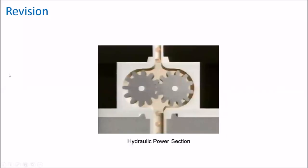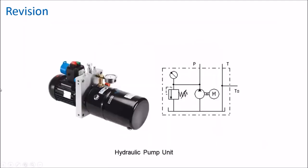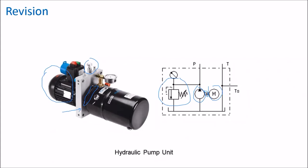That was an illustration video on how the pump operates. This is a mini pump — a portable pump which is normally used with the training set we have in college. The pressure relief valve is located here, and you have the motor here, the pump here, and the coupling — this metal block here is the coupling. These are the components of the hydraulic pump unit.